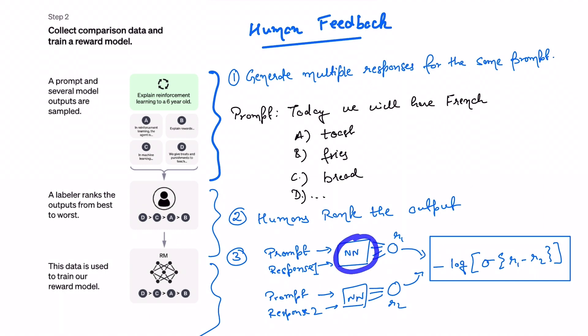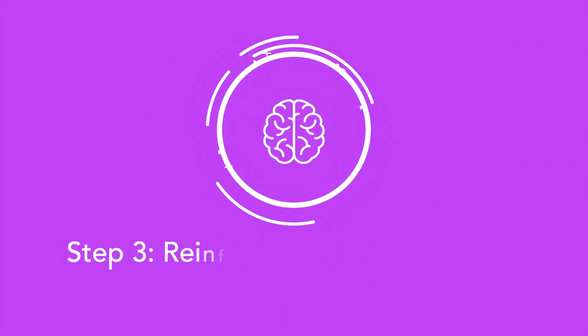We then ask human annotators to rate these outputs in the order of best to worst and then we train a separate neural net model, we call this a rewards model, that takes the prompt and the model's output together and it tries to predict what would have been the reward provided by the human. The idea is to train the separate reward model to evaluate the output of our supervised fine-tuned GPT so that in step three we won't need humans but directly use the reward model's output to evaluate our fine-tuned GPT.